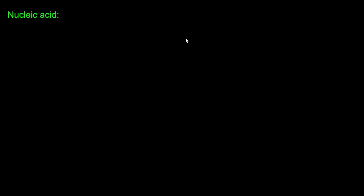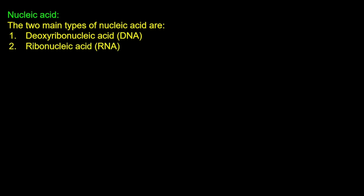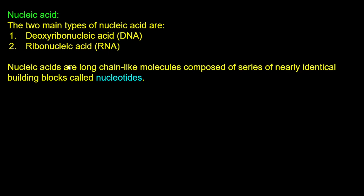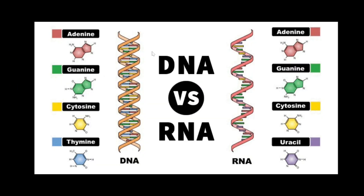The next topic is nucleic acid. There are mainly two types of nucleic acid: DNA, which stands for deoxyribonucleic acid, and RNA, which stands for ribonucleic acid. Nucleic acids are long chain-like molecules composed of a series of nearly identical building blocks called nucleotides.